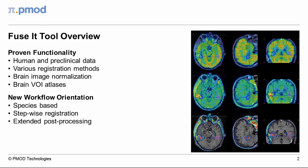Its unmatched range of functionality includes various registration methods, brain image normalization, and atlases. Our new Fuse-it tool further extends the range of features and organizes the registration tasks into streamlined workflows for different species, guiding the user in simple steps to an accurate and reproducible registration, facilitating combined information mining and multiple post-processing approaches. Some of the features available in the Fuse-it tool will be briefly presented in the following demo.